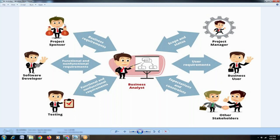If you look closely, there are different stakeholders — external and internal. External stakeholders include the project sponsor and business users who support us from outside. Internal stakeholders include developers, the testing team, and the project management team — they are part of your team. Interacting with both types of stakeholders is essentially required for a BA to perform.